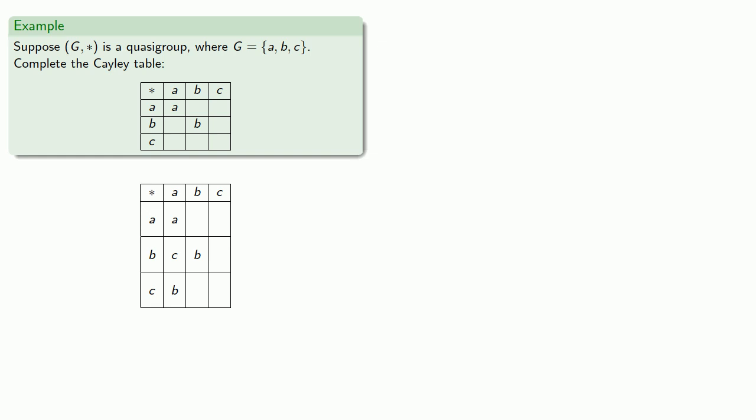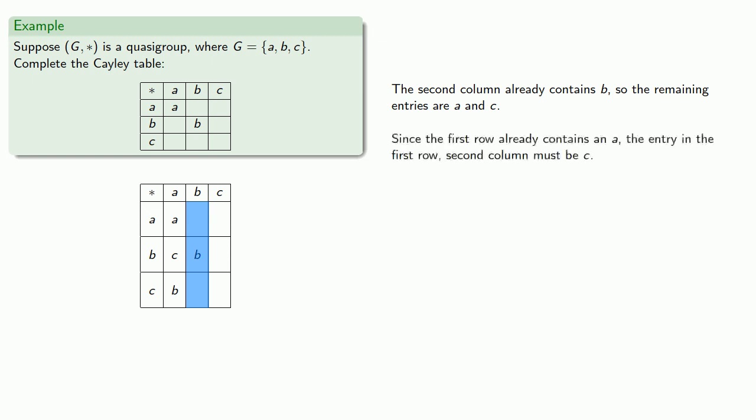Now let's take a look at that second column. The second column already contains a B, so again the remaining entries have to be A and C. But since the first row already contains an A, the entry in the first row's second column must be C, and the entry in the last row must be A.